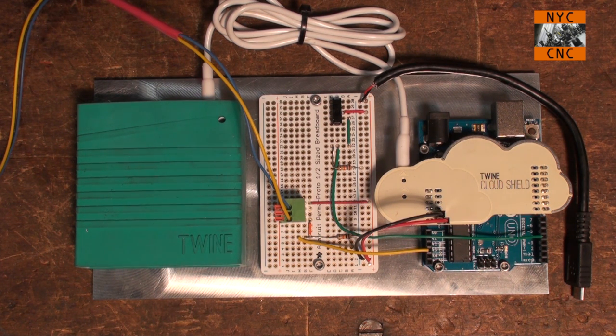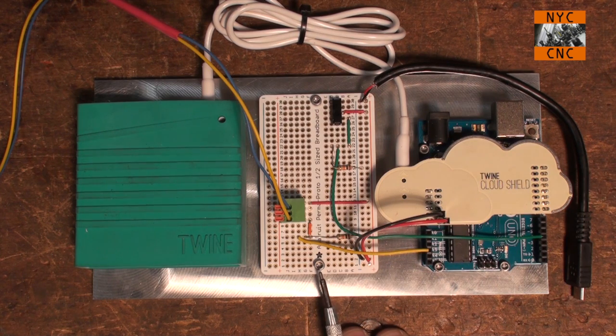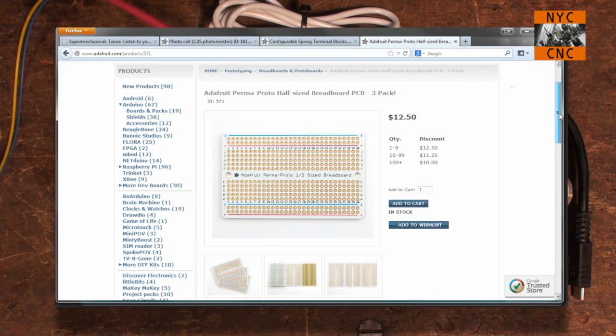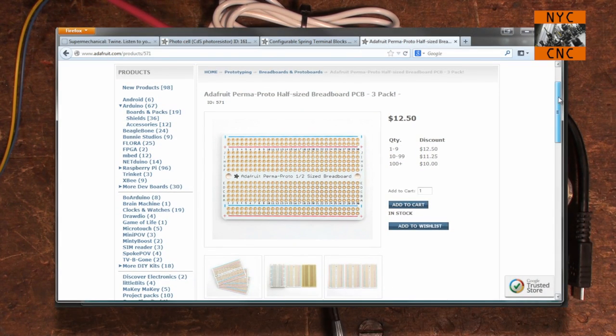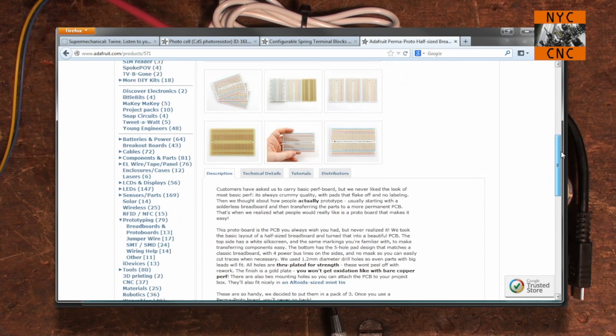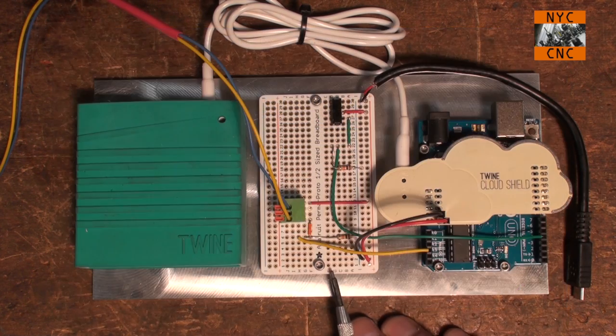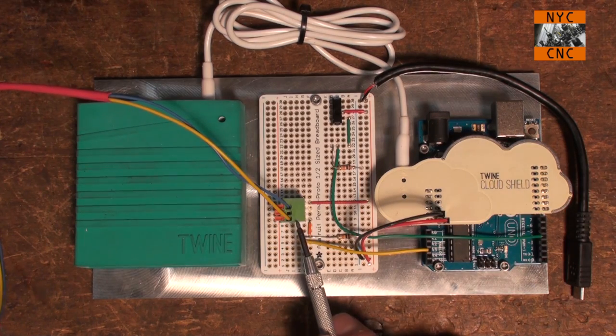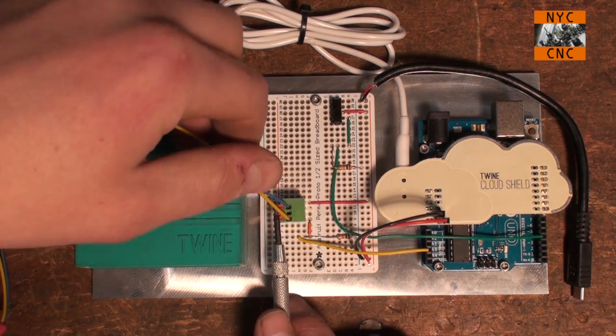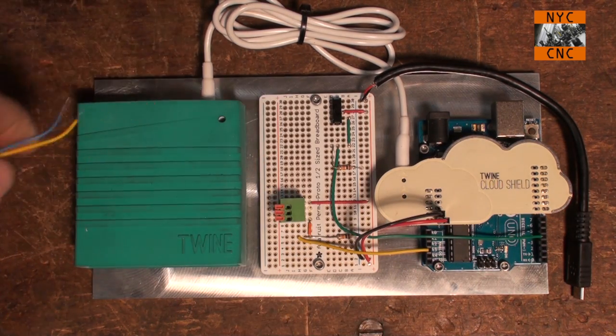I've got the Twine on the left. There's a link in the YouTube video to where you can find out more about the Twine. In the middle I've got an Adafruit Perma-Proto board. These are great if you want something more permanent than a breadboard. They're way higher quality with really nice pads. I also use these Adafruit terminal blocks. I really like them—they're quick detach and easy to reconnect.